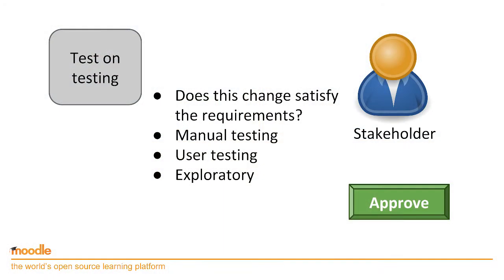The first stage of testing is where somebody who requested a change needs to verify that the change actually achieves the outcome they were looking for. It's not just 'does this thing work' — it's also 'does this thing work nicely.' Are we happy with the user experience? And exploratory testing across different browsers and different combinations of settings to make sure that yes, we definitely want this change on our production server.